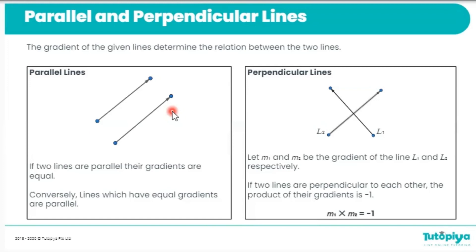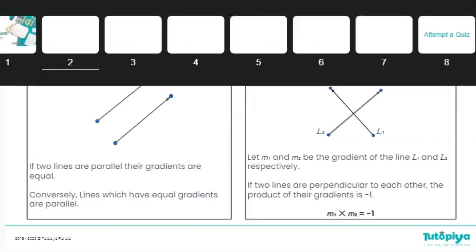This can work the other way as well. Say I have lines that have the exact same gradient — say a gradient of negative 5 and another line also with a gradient of negative 5. Knowing that they have the exact same gradient, I can conclude that these lines should be parallel to each other.